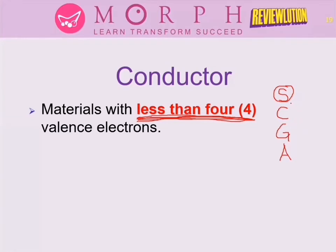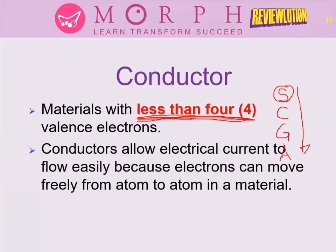Conductors allow electrical current to flow easily because electrons can move freely from atom to atom. The reason is that conductors can easily provide free electrons. A free electron is a valence electron that has gained enough energy — such as from heat — to jump out of its valence shell and become unbound from its parent atom, free to move around.